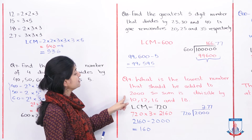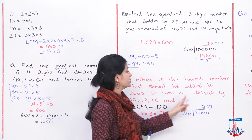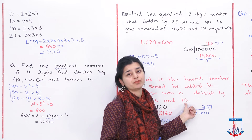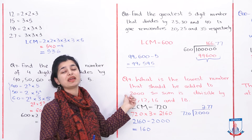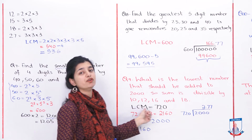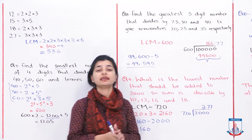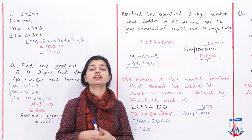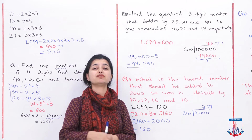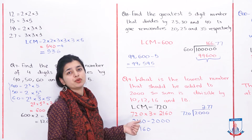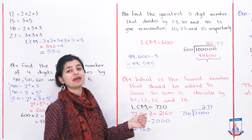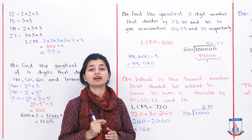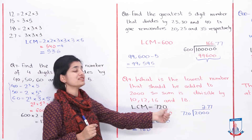Question number 9: What is the lowest number that should be added to 2,000 so that the sum is divisible by 10, 12, 16, and 18? You need to find a number to add to 2,000 so that it divides by all four of those numbers. First, you will find the LCM of 10, 12, 16, and 18. Write them in prime factors, find the highest powers, and the LCM comes out to 720.